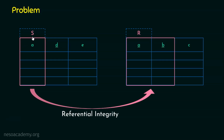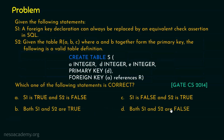A foreign key must reference a candidate key. A primary key is a column or combination of columns that uniquely identifies a row, and a candidate key is any column or set of columns that can act as a primary key. Since A in relation S needs to reference A and B jointly in relation R, the single attribute A alone cannot serve as a valid foreign key reference. Therefore, Statement 2 is also false.